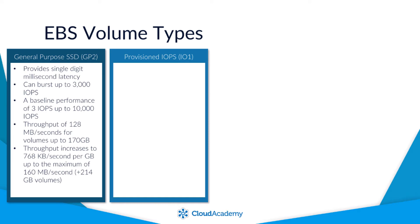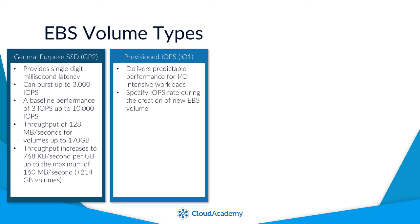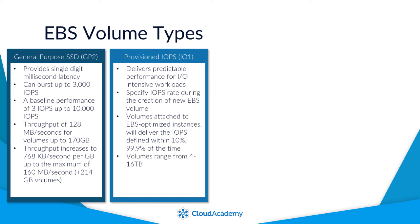Provisioned IOPS SSD volumes deliver enhanced predictable performance for applications requiring IO-intensive workloads. They also have the ability to specify the IOPS rate during the creation of a new EBS volume. When the volume is attached to an EBS-optimised instance, EBS will deliver the IOPS defined and required within 10%, 99.9% of the time throughout the year. The volumes range from 4 to 16 terabytes in size, and per volume the maximum IOPS possible is set to 20,000 IOPS.